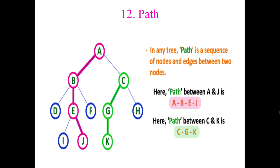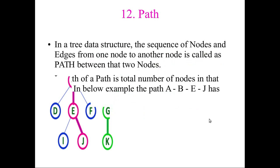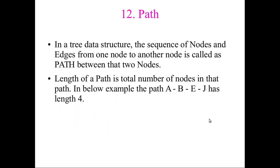Next is path. Path is simply a sequence of nodes or edges between any two nodes. For example, A to J is one path, and C to K is another path. Paths like these are used in applications like Google Maps, making this tree structure very useful in day-to-day life.